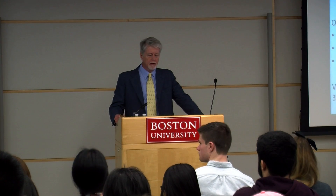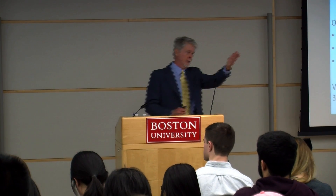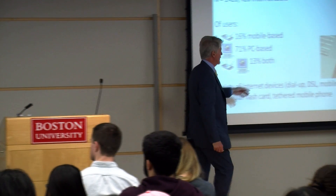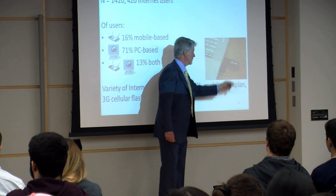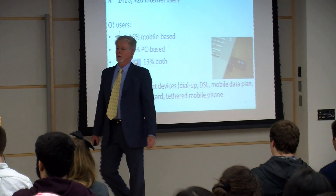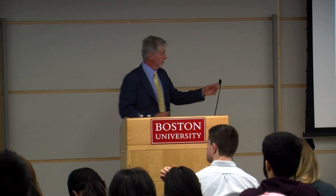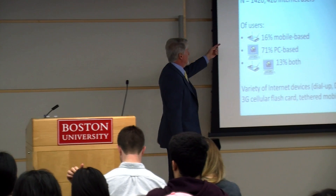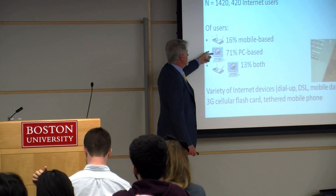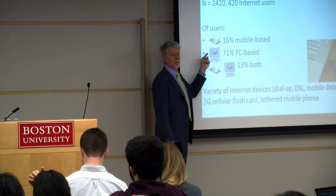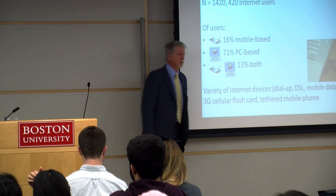Going back to Armenia: it's a place where we actually have people who use both devices. For example, there's a service called Orange — a little flash drive that's actually a way to use your phone to connect to the internet. About 16% access the internet by mobile phone; a high number do so at work, since people tend not to have computers at home. About 13% use both.